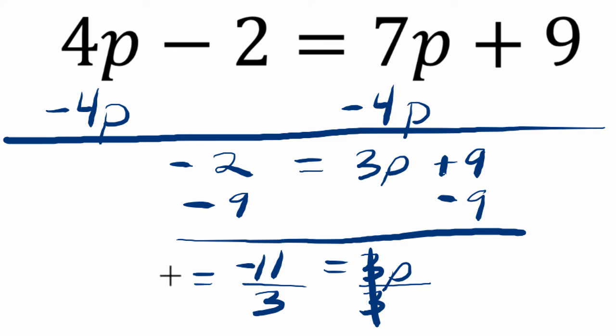3 goes into negative 11, negative 3 times, with a remainder of 2, or 2 thirds, which is 0.6 repeating.